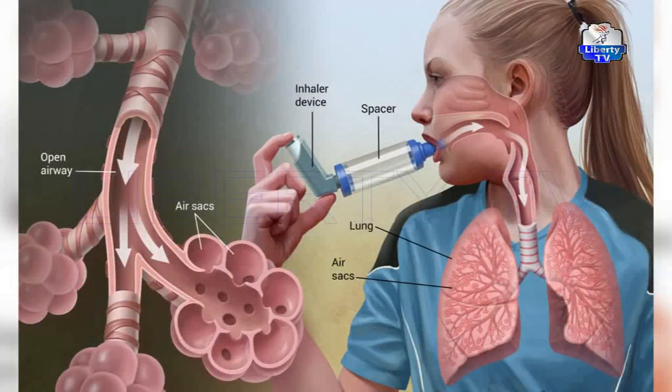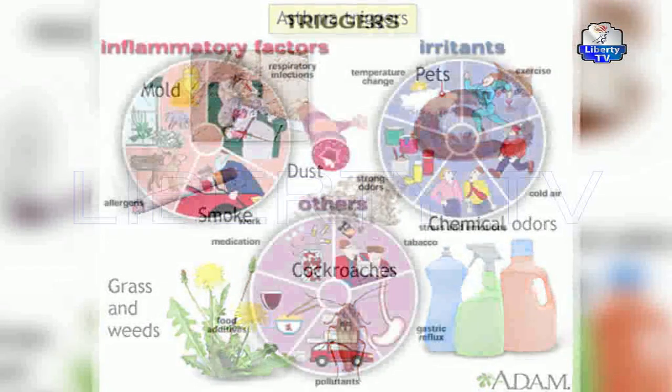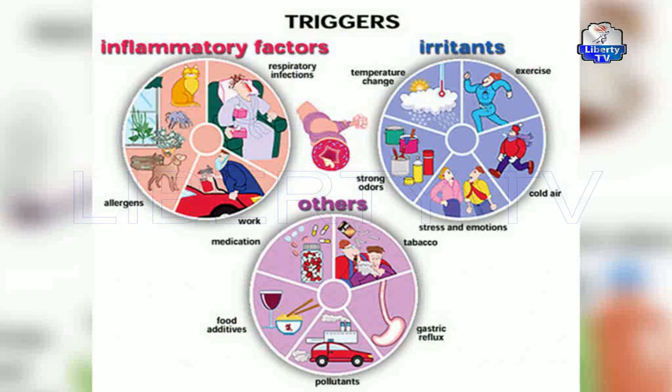Extreme cold weather and even extreme emotions can trigger asthma attacks. Certain drugs such as non-steroidal anti-inflammatory drugs like paracetamol and aspirin, as well as beta blockers, are also triggers. That is why asthmatics who are hypertensive are not advised to take beta blocker drugs.